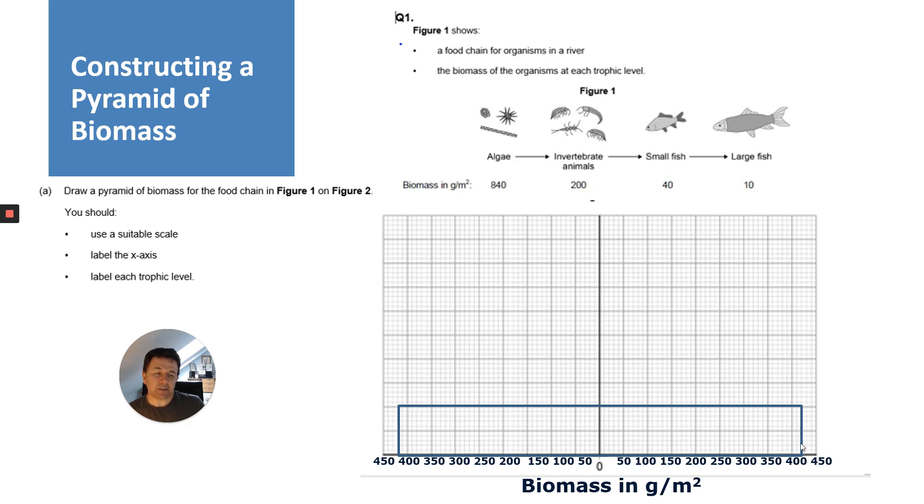The next one is the invertebrate animals, and that's an easy one because it's 100 each side. Then 40—that's 20 each side, so that's going to be a bit more fiddly in terms of using the smaller squares. Then the large fish is even fiddlier because it's only one square either side of the line.